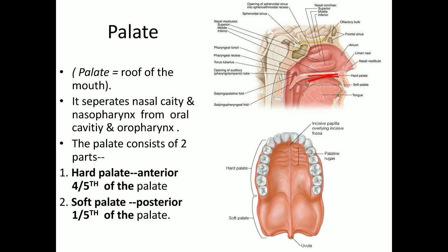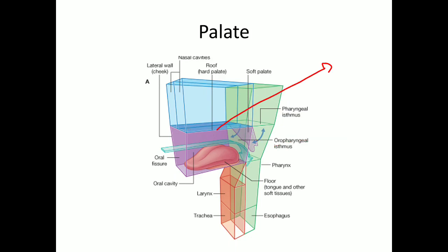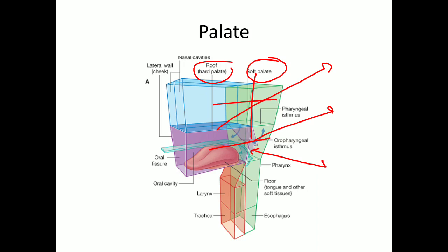The anterior four-fifths of the palate is formed by the hard palate and the posterior one-fifth is formed by the soft palate. Here you can see the nasal cavity, nasopharynx, oral cavity, oropharynx, and the palate. The anterior part is the hard palate forming the roof of the oral cavity, and the posterior part is the soft palate. From the inferior part of the soft palate there is a tongue-like projection called the uvula. The palate separates the nasal cavity and nasopharynx from the oral cavity and oropharynx.